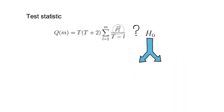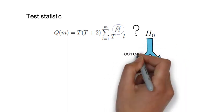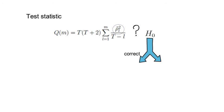And next, if the H0 was correct, then Q of M would follow a chi-square distribution with M degrees of freedom. Such a distribution is denoted as follows.